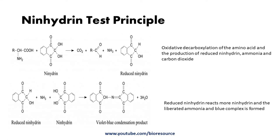The diketohydrin absorbs light at 570 nanometers. Proline gives a yellow color because it lacks a free alpha amino group. The molar absorption coefficient of the colored product can be used for quantification of individual amino acids, though this value varies from amino acid to amino acid.